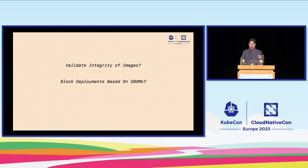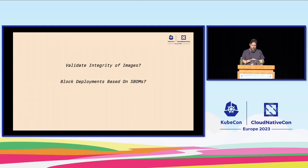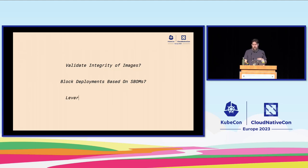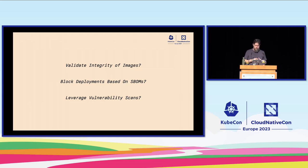Maybe we want to leverage vulnerability scans — a nightly process that scans all of the images in production and attaches a SARIF report from Trivy or similar with all the identified vulnerabilities. Then we want to block or audit everything that has critical vulnerabilities aligning with our compliance requirements. To do that, we're obviously going to need some pieces of external data, because those aren't going to be defined in the pod spec as part of the core Kubernetes admission flow.